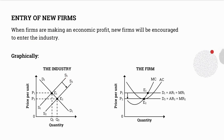The supply curve will move to the right to indicate an increase, forming a new supply curve S2. Where S2 intersects with D1, a new equilibrium of E2, equilibrium price of P2, and quantity of Q2 will be formulated. The firm is a price taker and will adopt the price of P2. At the price of P2, a normal profit is made because the average cost is equal to the average revenue.